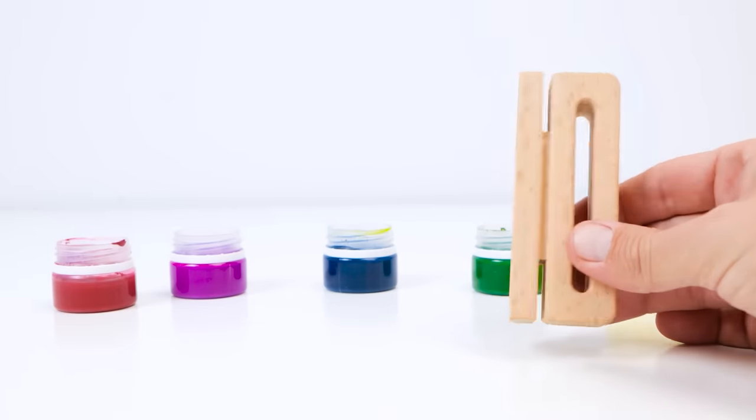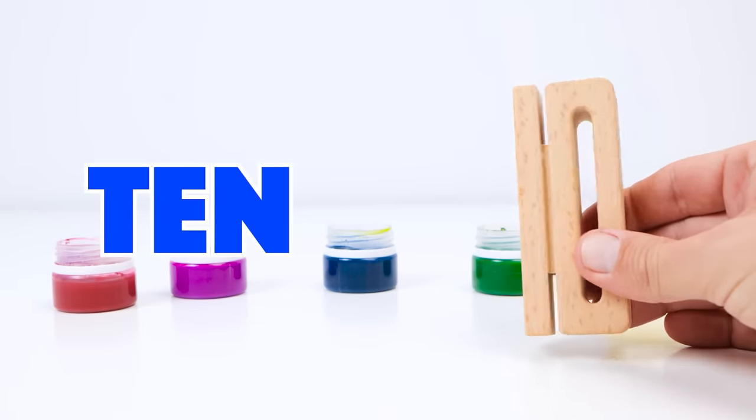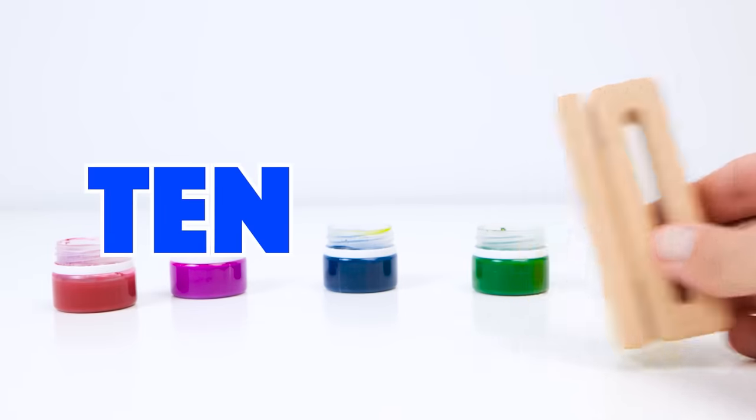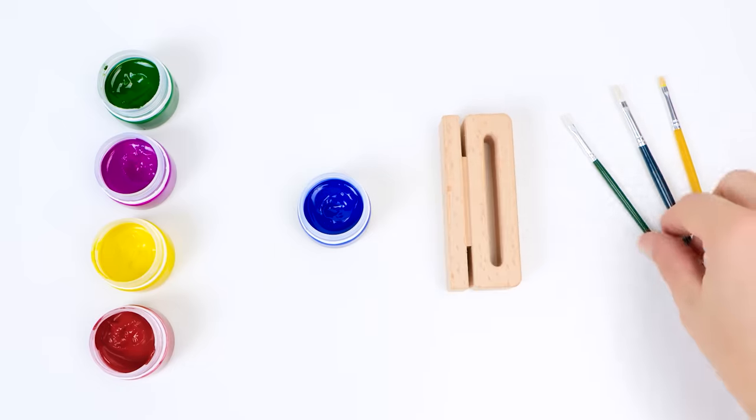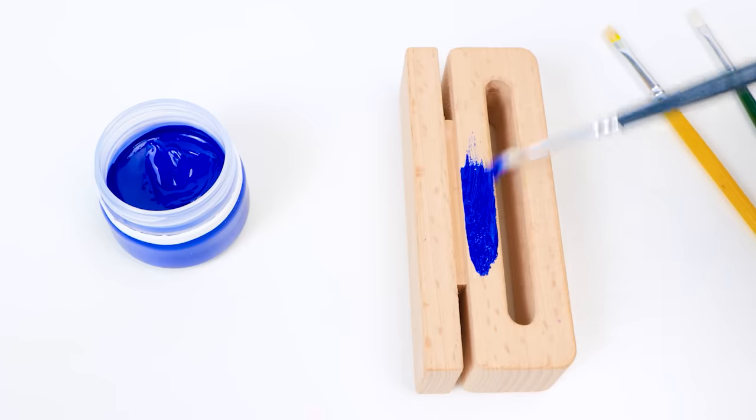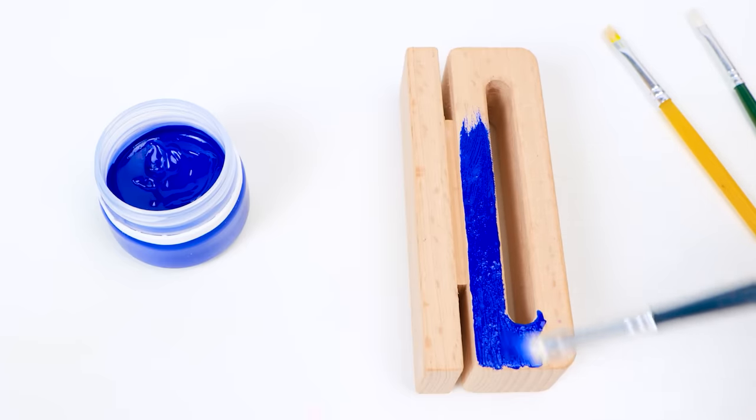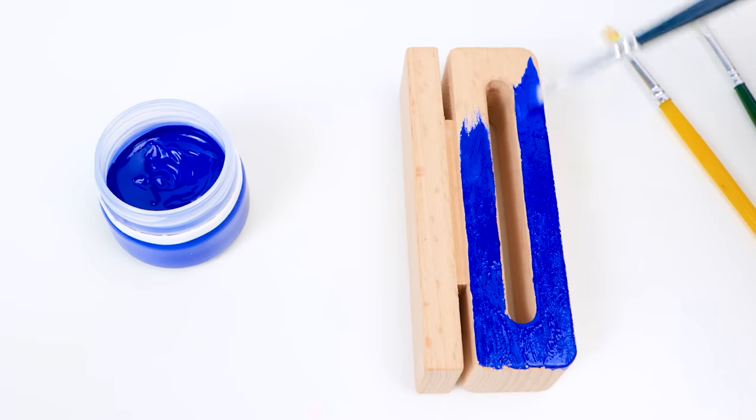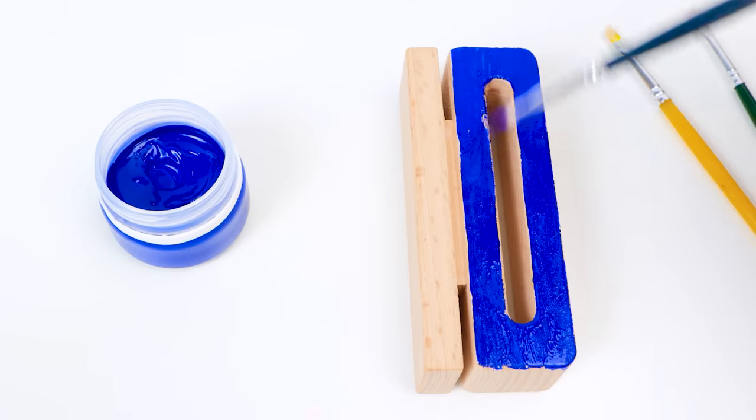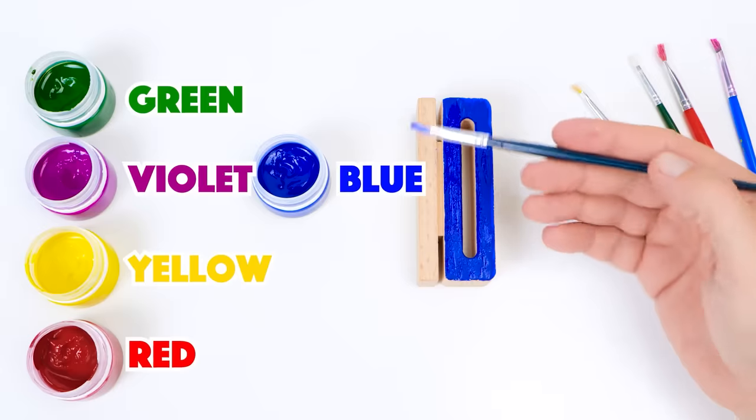Finally, we have the number ten. Look closely. It's made up of a zero and a one. I really like blue, so we'll paint half of our number ten with it. And for the one,